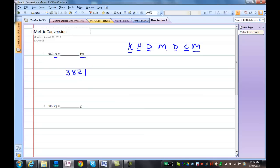So I want to convert from meters over to kilometers. I'll have to move the decimal point one, two, three places to the left. Coming back over here to my number, I'll move the decimal point one, two, three places to the left. So that tells me that 3,821 meters is equal to 3.821 kilometers.